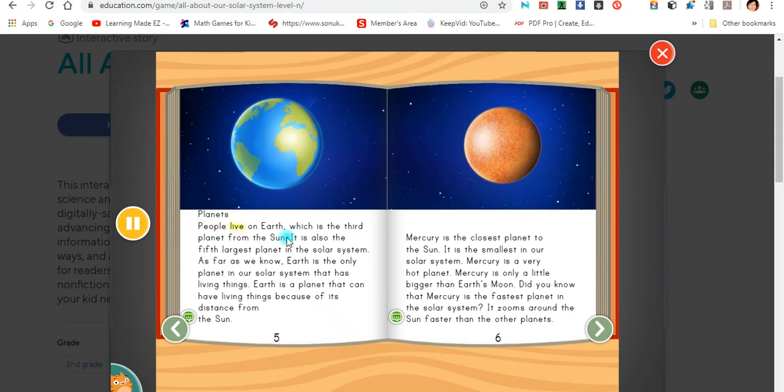Planets. People live on Earth, which is the third planet from the sun. It is also the fifth largest planet in the solar system. As far as we know, Earth is the only planet in our solar system that has living things. Earth is a planet that can have living things because of its distance from the sun.